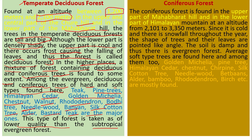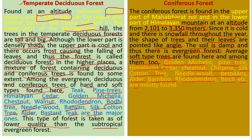The third type is Coniferous Forest, found in the upper part of the Mahabharata Hills and the lower part of the Himalayan mountains at altitudes of 2101 to 3315 meters. Since it is cold and there is snowfall throughout the year, the shape of trees and their leaves are pointed. The soil is damp and thus there is evergreen forest. Soft types of trees found here include golden oak, fir, Himalayan cedar, chestnut, chirpine, silk cotton trees, needlewood, alder, bamboo, rhododendron, beech, and others.